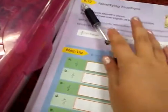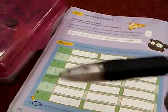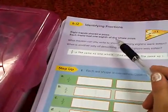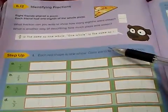It's me, Jay, and today I'm going to be in my journal on 6.2, and it's identifying fractions. Now, this is really good for kids also, and I'm just going to say, I'm 30. It says eight fractions shared a pizza. Each friend had one-eighth of the whole pizza. We don't really need to worry about this problem, so I just need to step up. It says each red shape is one whole. Color the box to show each fraction. One-third.